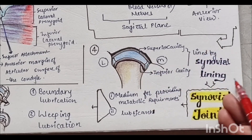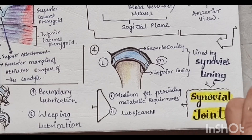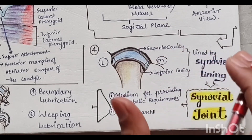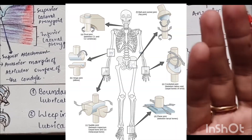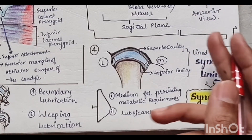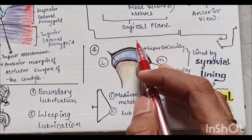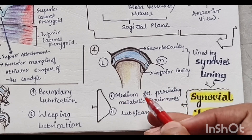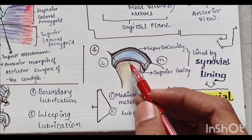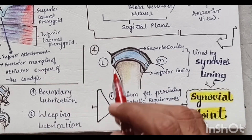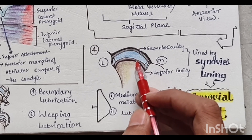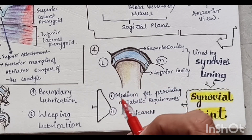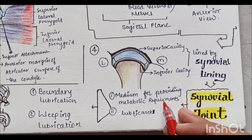The linings of these cavities are called synovial linings, because they produce synovial fluid — which is why the TMJ is called a synovial joint. Synovial fluid has two important functions: first, it serves as the medium for providing metabolic requirements, since the disc has no blood supply and nutrient exchange occurs via the synovial fluid released from the articular surfaces. Second, it acts as a lubricant.